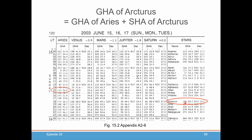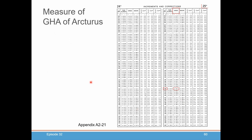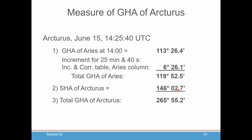Remember this Arcturus number: 146 degrees and 2.7 minutes for SHA, and the declination was North 19 degrees 10 minutes. Just as we did in our last episode, you have to get the minutes and seconds in the Aries column for your increments. We see that it's 6 degrees and 26.1 minutes that we need to add to the GHA of Aries at the 14th hour. So we've copied over our GHA of Aries at 1400 hours, added our increment of 6 degrees 26.1 minutes, and we get a total GHA of Aries at the time of our sight of 119 degrees 52.5 minutes. To get the GHA of Arcturus, we just add the SHA of Arcturus, which was 146 degrees 2.7 minutes, giving us 265 degrees 55.2 minutes.